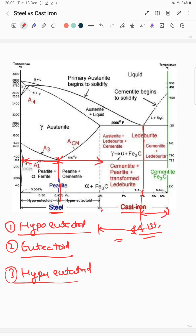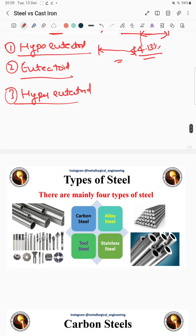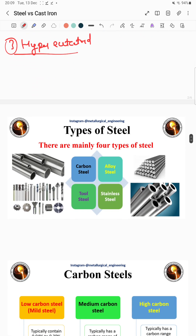Steel and cast iron are also categorized based on carbon percentage and application. For example, steel is categorized mainly into four types: carbon steel, alloy steel, tool steel, and stainless steel.